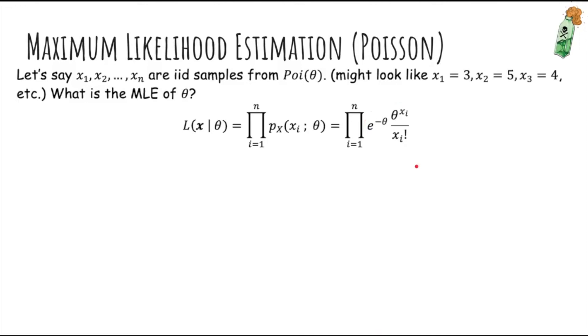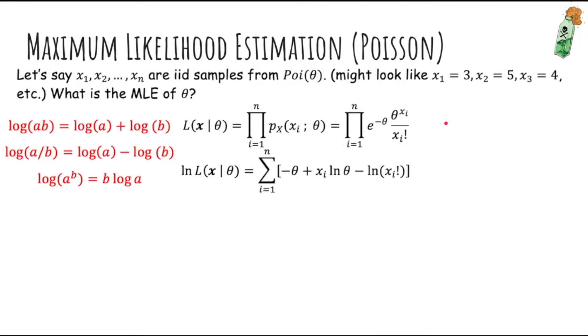So we want to find what value of theta maximizes this likelihood. But the problem is that this is actually pretty hard to differentiate, so to make it easier let's take the log and we can use these identities to help us. So again, the product becomes a sum and multiply becomes plus, divide becomes minus if you log everything. Then the log of the first term is just the exponent negative theta. The log of theta to the xi is just xi log theta, and then we have minus log of xi factorial. And if this was confusing just pause it and try to use these formulas to derive this equation.